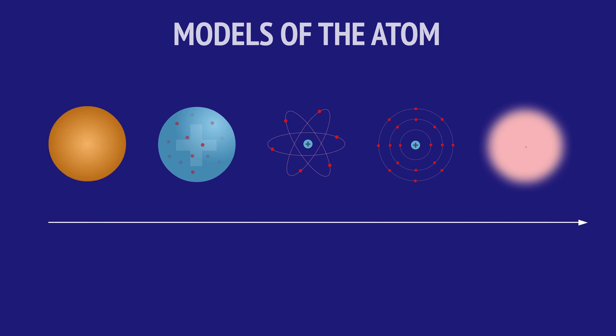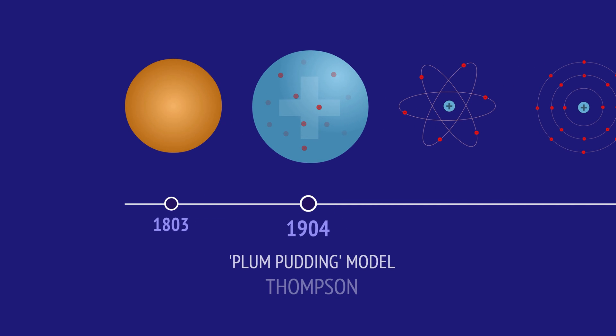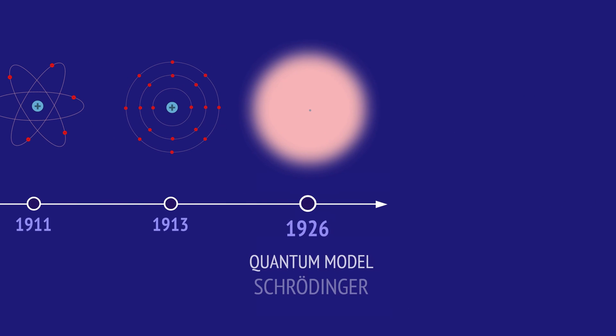At the beginning of the 20th century, our model of the atom was evolving rapidly. In a period of just over 20 years, a series of experiments and discoveries would radically change our understanding of the material world.